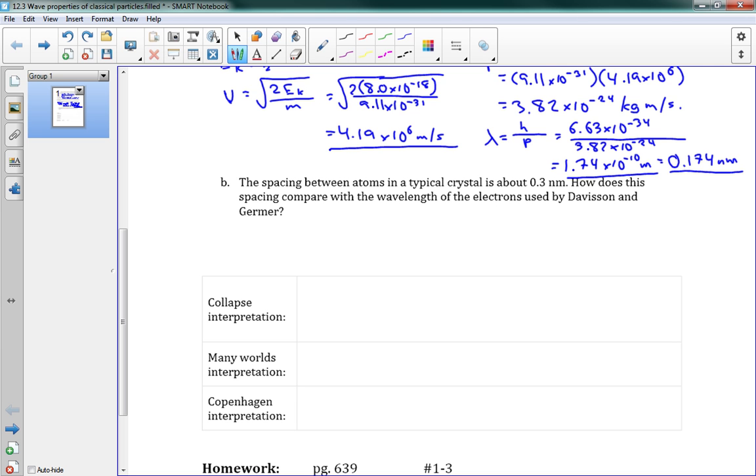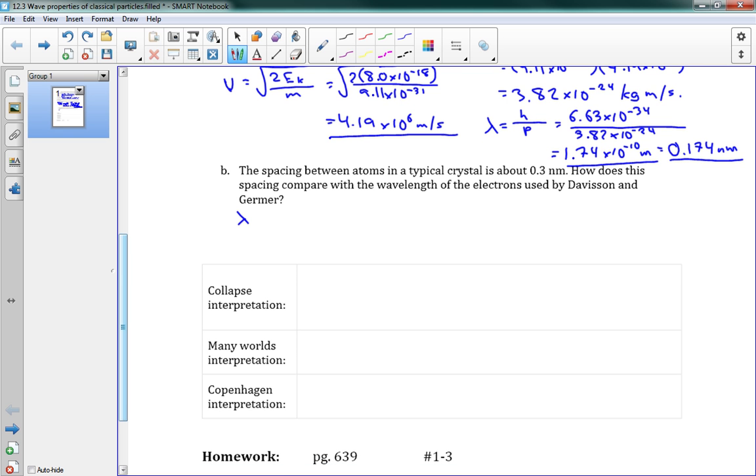Now, they're asking because Davison and Germer sent these electrons through these crystals to interfere. So, 0.3 nanometers compared to our 0.174 nanometers. So, we can say here that the lambda is less than 0.3 nanometers.